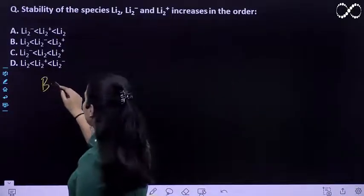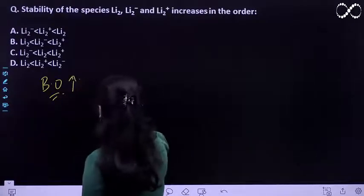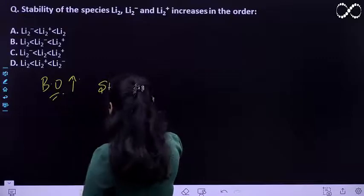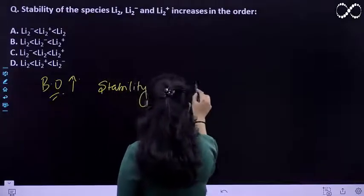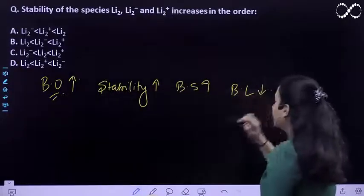What you have to find out is the bond order. Just like the bond order will increase, the stability will increase more because the bond strength will increase and the bond length will decrease.